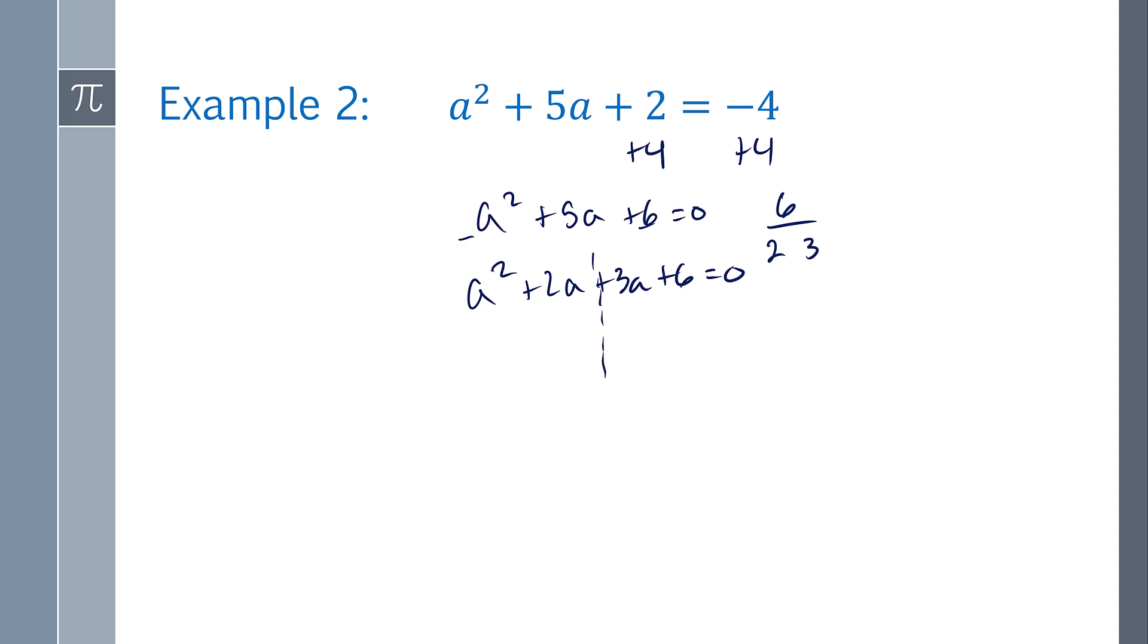Factor by grouping, there's an a in common. And then over here, factor out 3, and so you're going to get a plus 2, and a plus 3 equals 0.